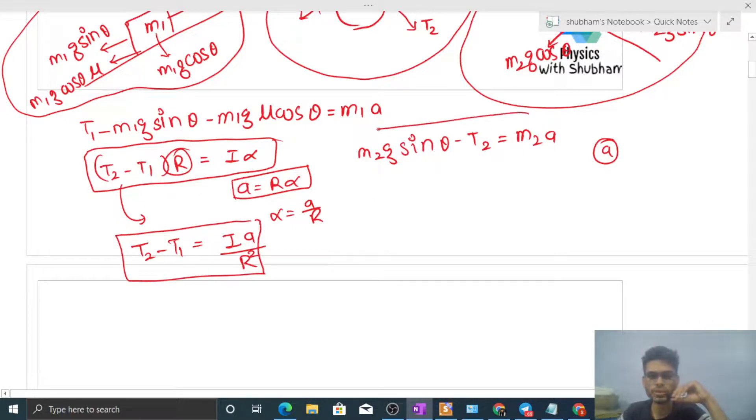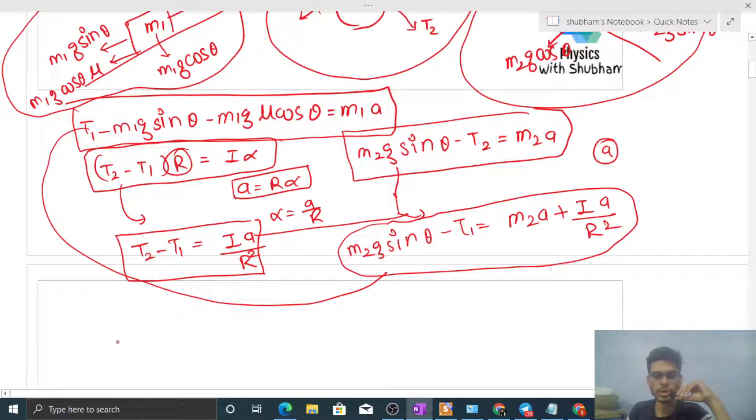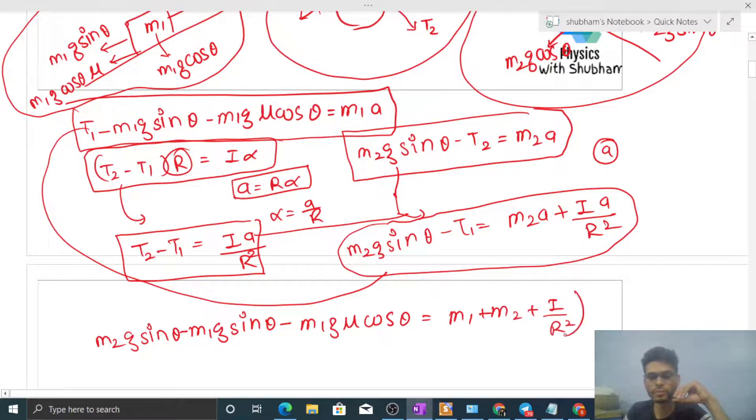Now if I add these two equations, then T2 gets eliminated. If you add the two equations, it will be M2 a plus I a upon R square. Now for T1, in these two equations if we add, then M2 G sin theta minus M1 G sin theta minus M1 G mu into cos theta equals M1 plus M2 plus I upon R square into a. I have taken a common on the right side.